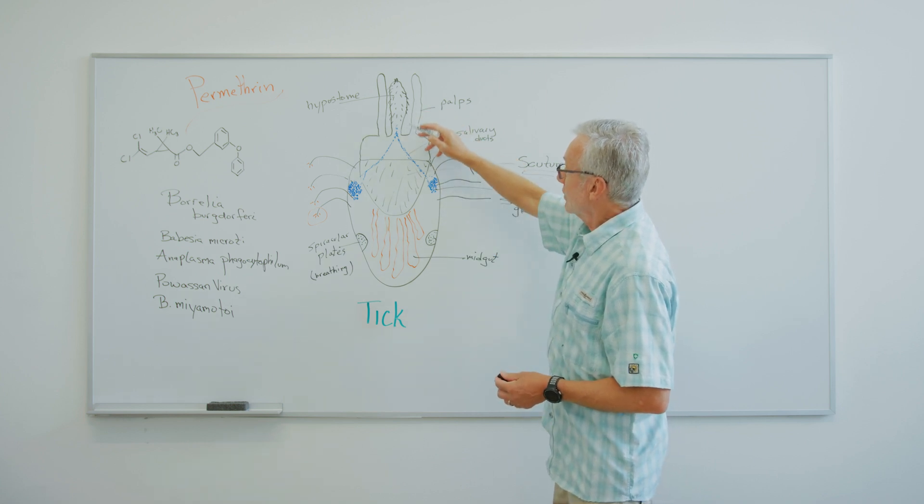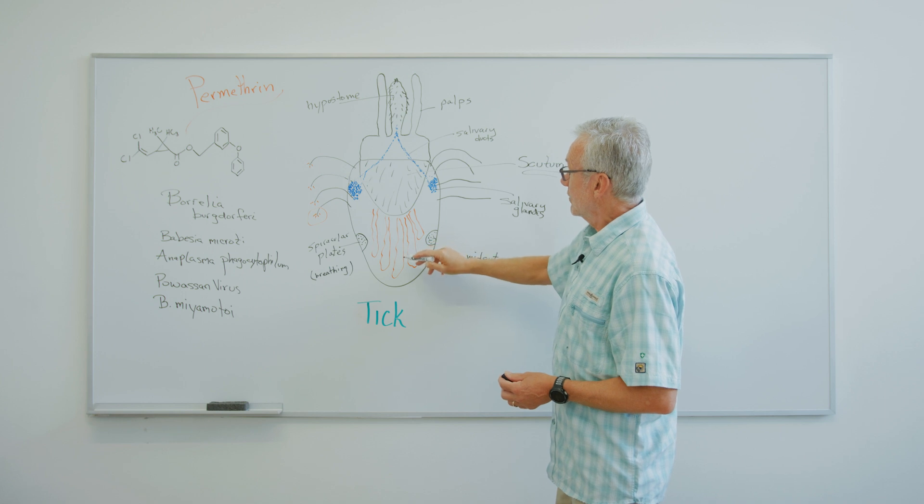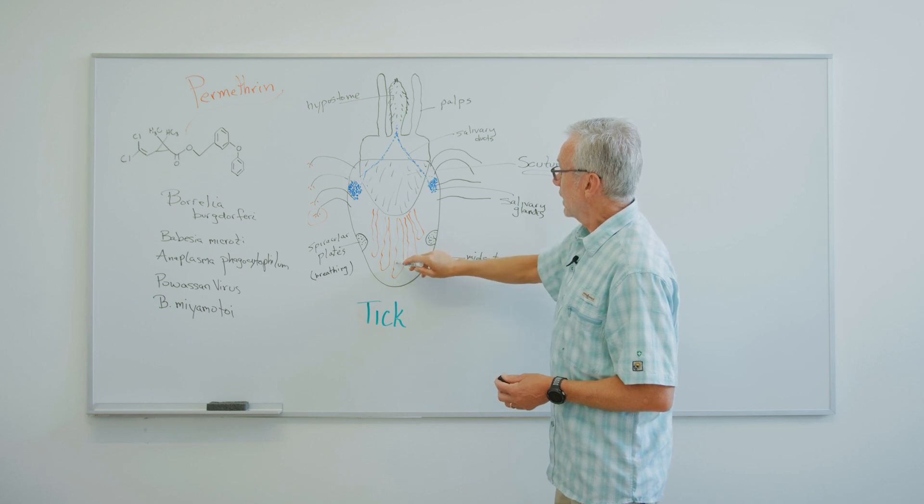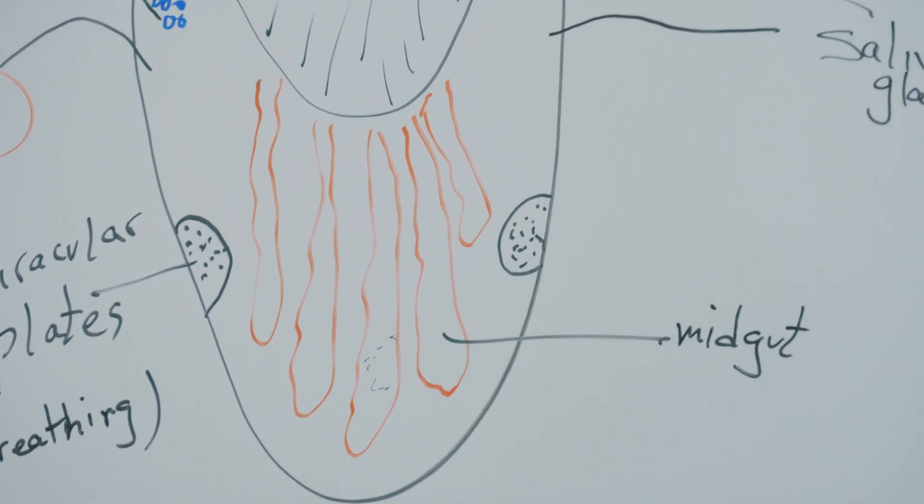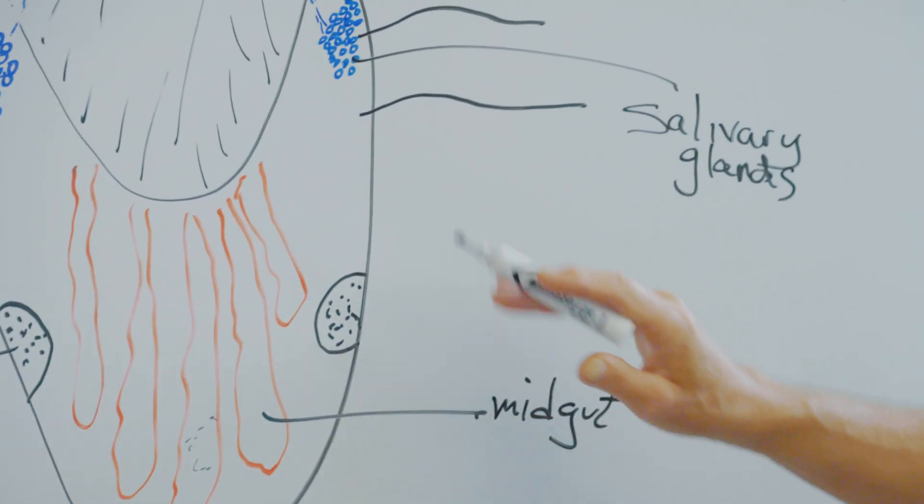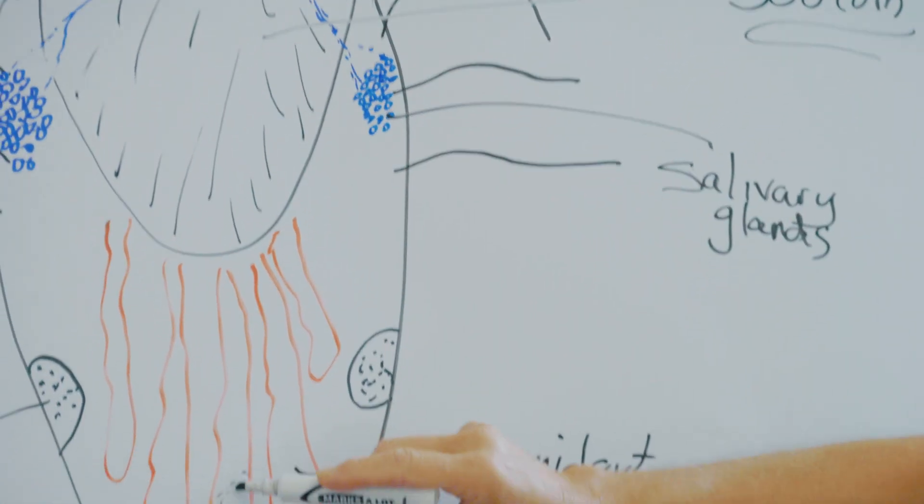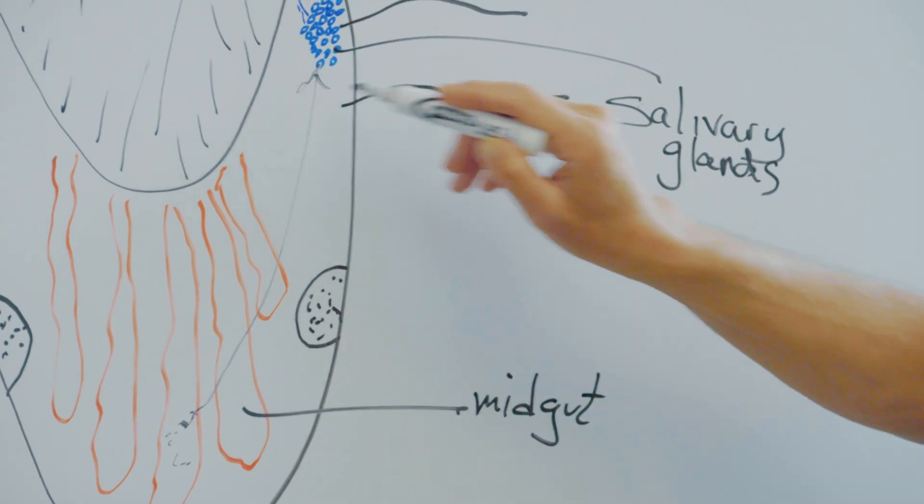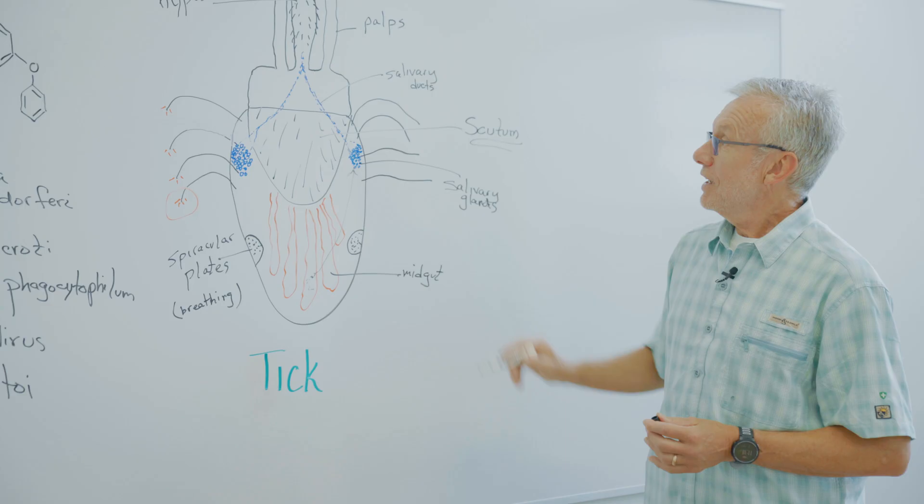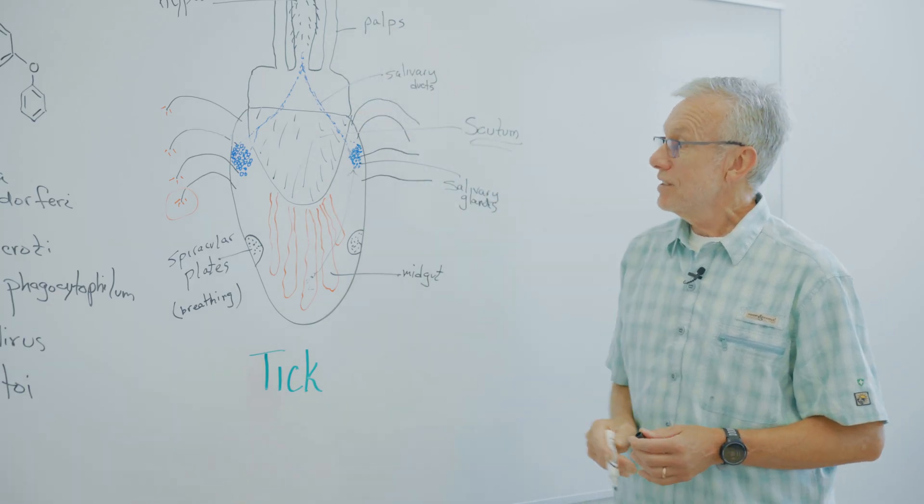But when a tick sucks in the blood, it sucks in germs, and the germs can be down in the midgut. At one point, as the tick is attached, the germs move from the midgut to the salivary glands. And that's how they end up being spit inside of you.